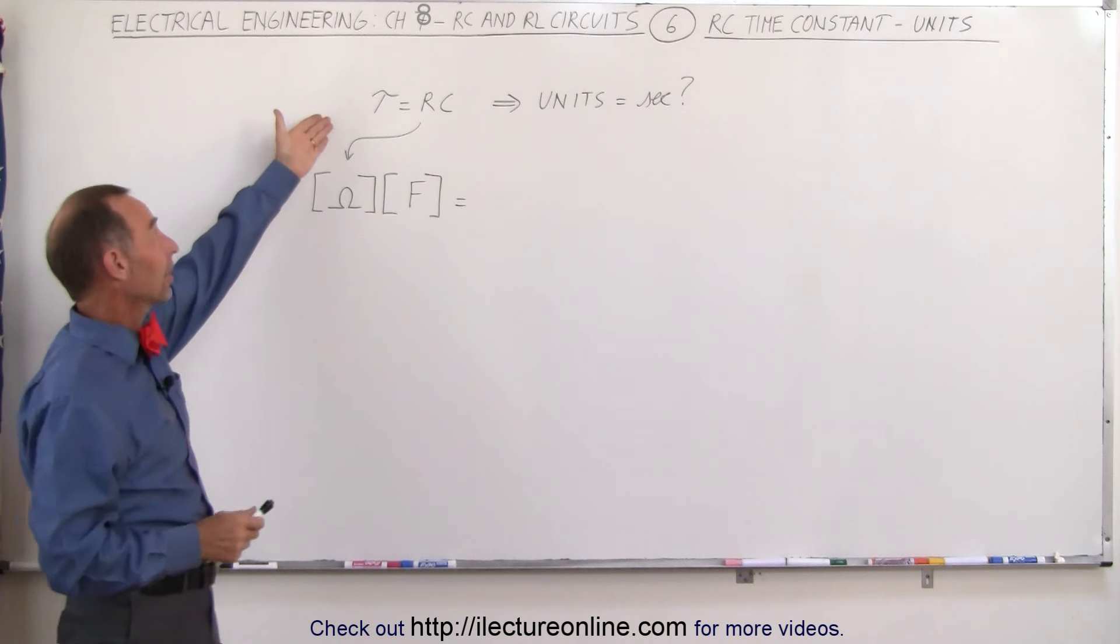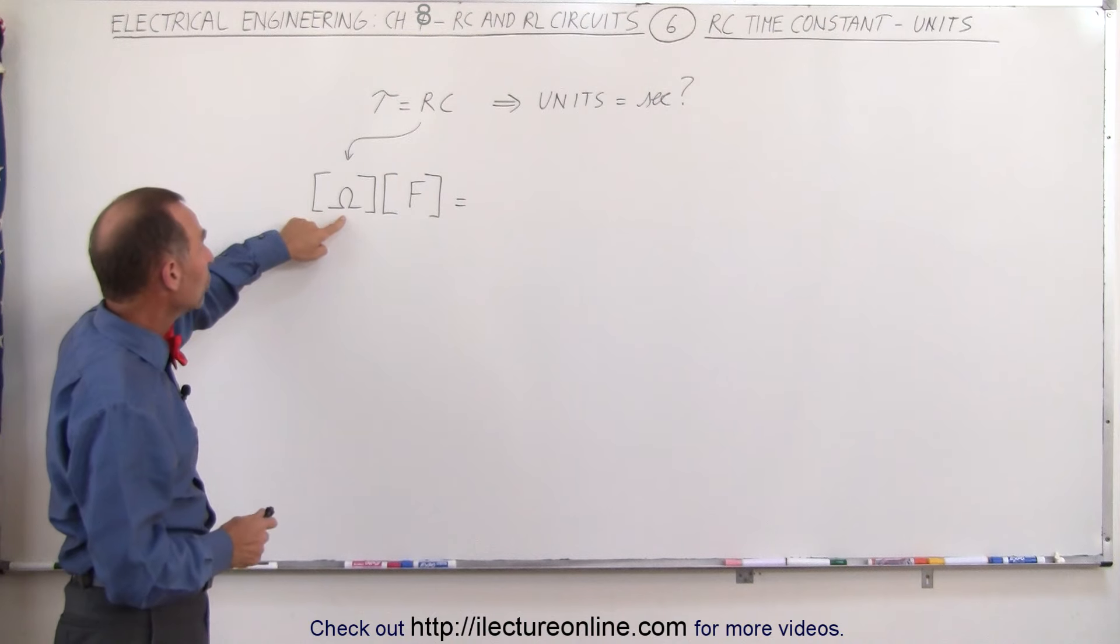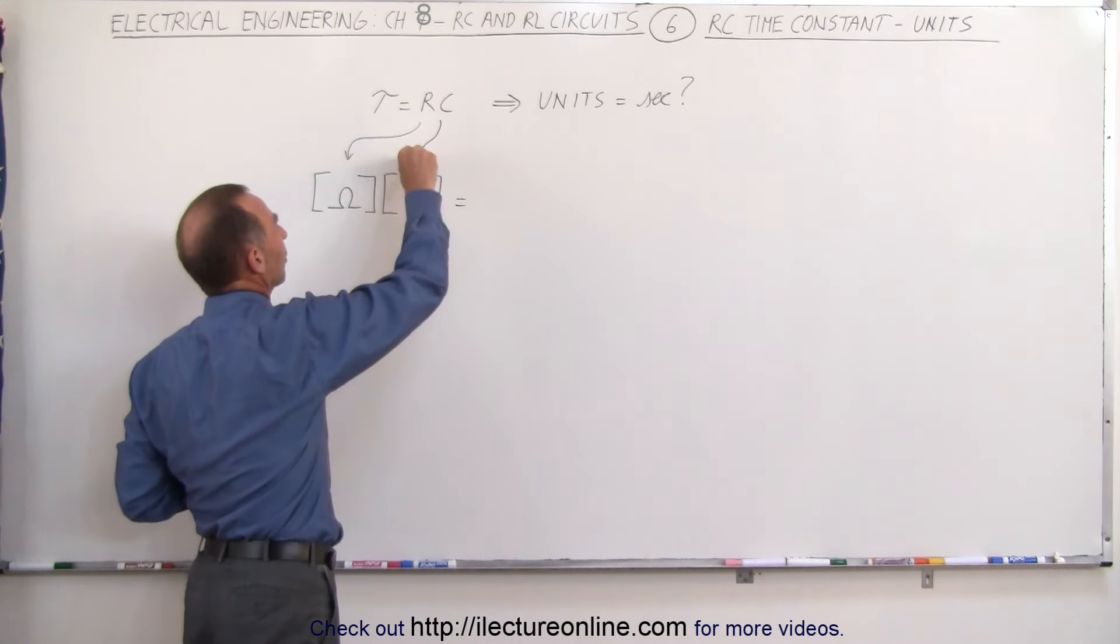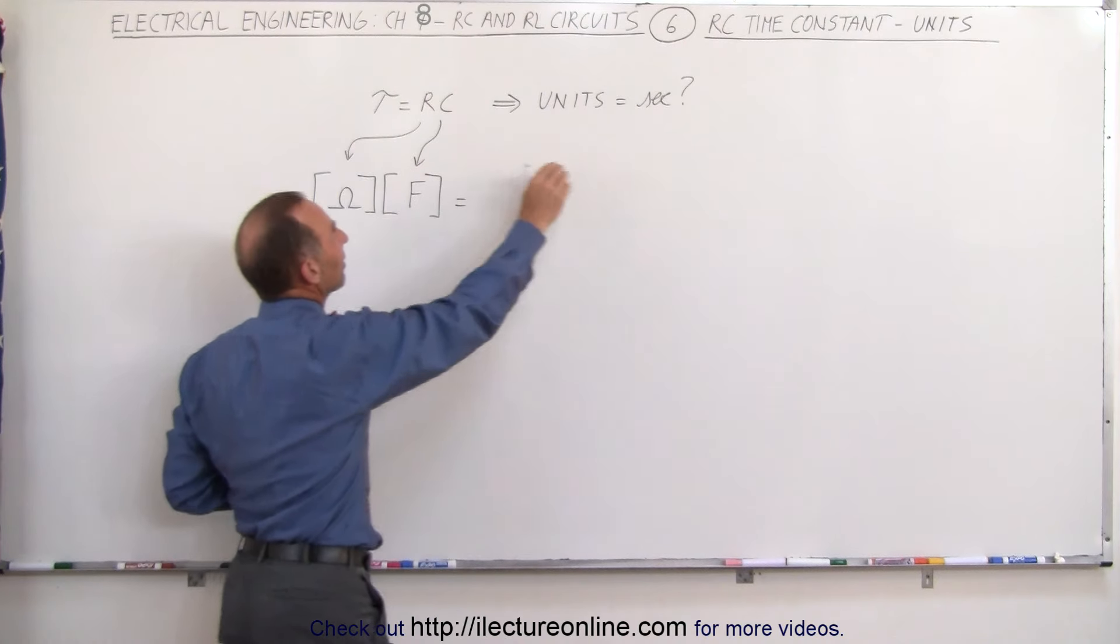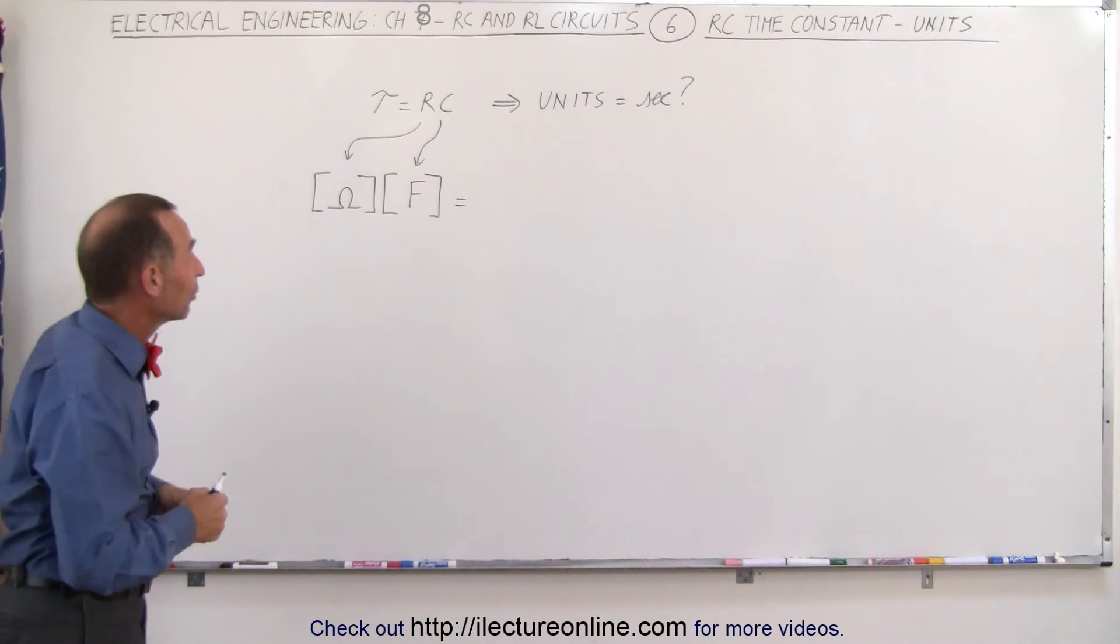The units for the time constant. It turns out the time constant is the product of the resistance times the capacitance, and the units of resistance are ohms, and the units for capacitor are farads. The question is how do we get seconds out of this product? Actually, it's easy to show you how to do that.